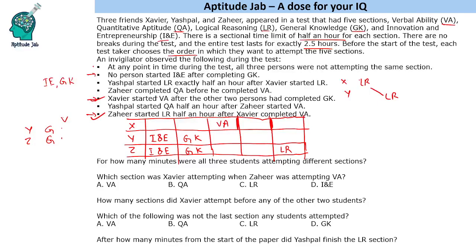Zaheer completed QA before VA, so QA comes before VA for Zaheer. Yashpal started QA half an hour after Zaheer started VA, meaning Zaheer started VA in slot 3, so Yashpal will start QA in the last half-hour (slot 5). There is also the LR relation between Xavier and Yashpal — that LR relation can only fit in the remaining phase. So Xavier has LR and Yashpal has LR in consecutive slots, with I&E, GK, LR, and QA accounted for.